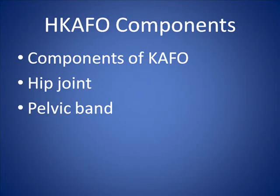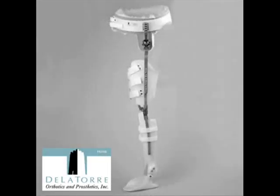A hip knee ankle foot orthosis, or HKAFO, can have some or all of the features of a KAFO. In addition, there is a metal hinge at the hip that prevents hip abduction, adduction, and rotation. The orthotic hip can also have a lock to prevent hip flexion. The pelvic band holds the proximal end in place, positioned between the trochanter and iliac crest. The person could walk with crutches or a walker by using a twisting motion of the trunk to move the orthosis forward.